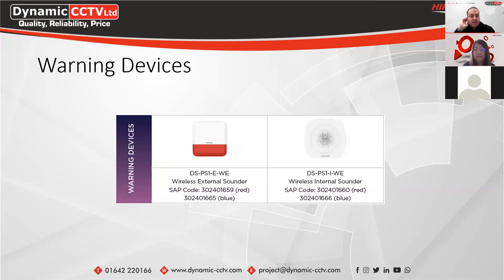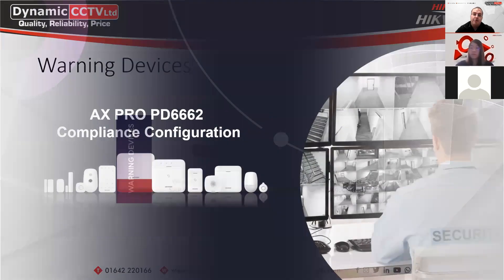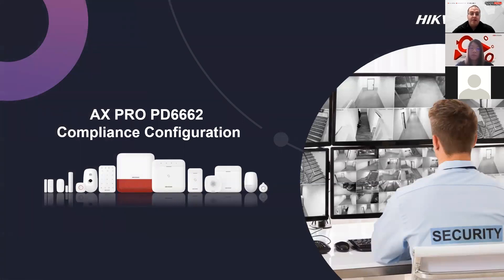The warning devices for the system are your different sounders. We've got the external sounder available in red or blue, and you can also get your company logos printed on the units. These are your wireless sounding devices. There's also an internal sounder which can be added into the system to trigger internally and notify you that someone's trying to break in. That's a quick overview of the different products in the AX Pro range. I'll now hand over to Lin, who's going to cover the new PD6662 compliance configuration available on the AX Pro.